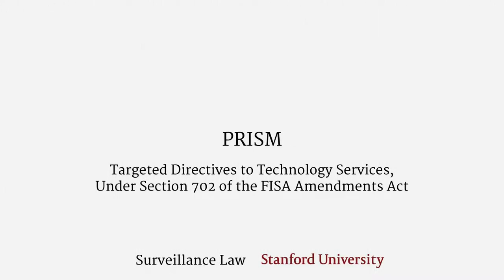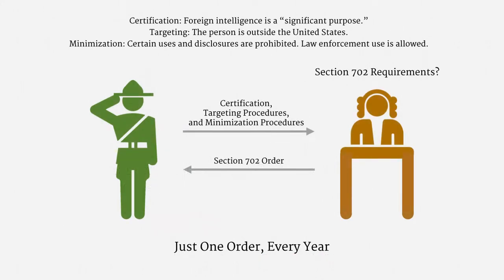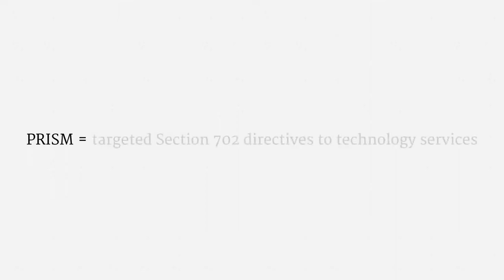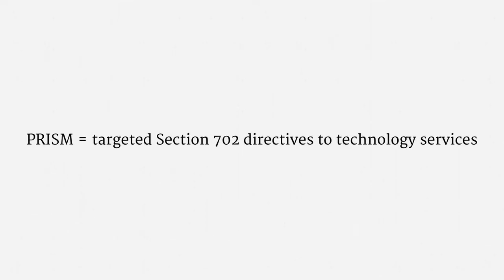Welcome back. In this lecture, I'm going to explain the PRISM program under Section 702 of the FISA Amendments Act. Section 702 has a very unusual structure. Each year, the Attorney General and the Director of National Intelligence have a set of certifications and procedures authorized by the FISA Court. Then the intelligence community can unilaterally issue directives in accordance with those procedures. The directives function like a combination of a provider warrant and a wiretap order. At base, the PRISM program is simply the issuance of targeted Section 702 directives to technology services.